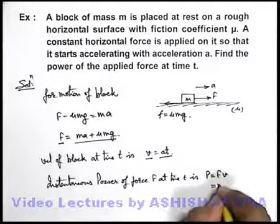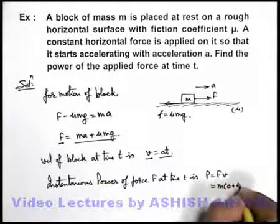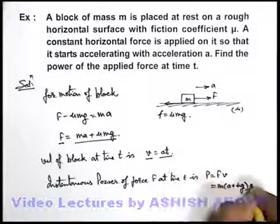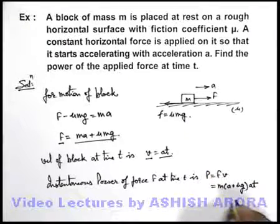Which can be written as m times a plus mu g times velocity that can be written as at. So this will be the answer to our problem.